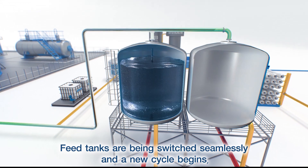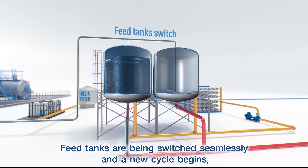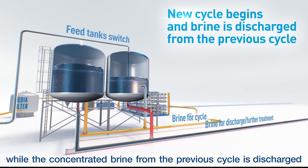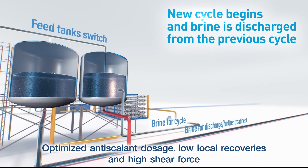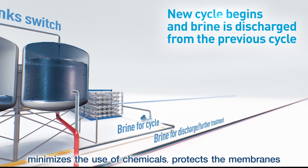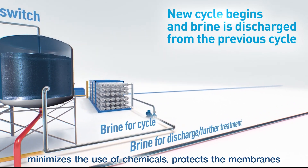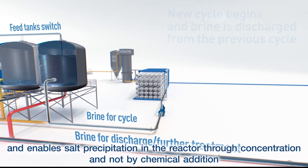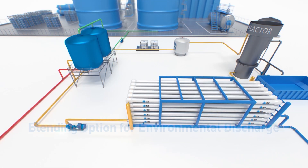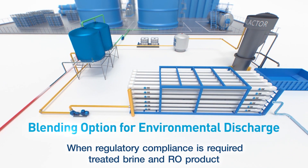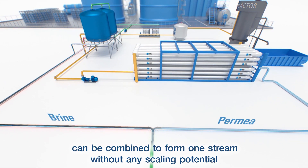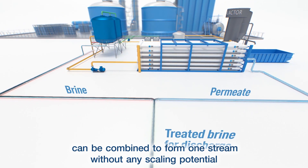Feed tanks are switched seamlessly and a new cycle begins while the concentrated brine from the previous cycle is discharged. Optimized anti-scalant dosage, low local recoveries, and high shear force minimize the use of chemicals, protect the membranes, and enable salt precipitation in the reactor through concentration and not by chemical addition. When regulatory compliance is required, treated brine and RO product can be combined to form one stream without any scaling potential.